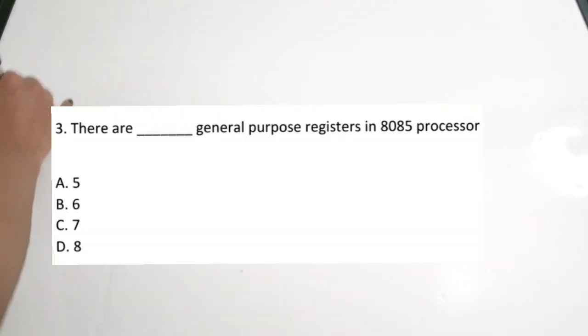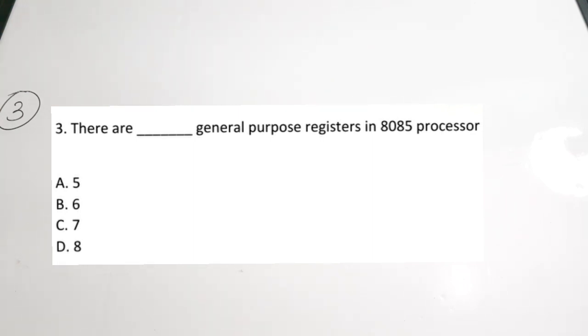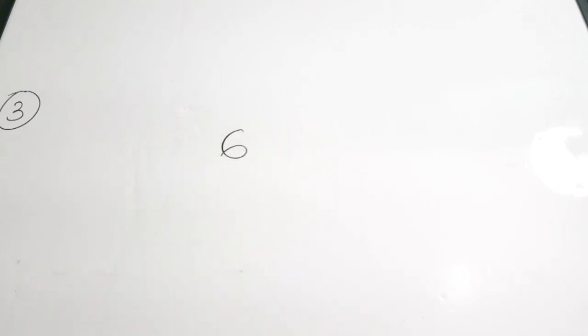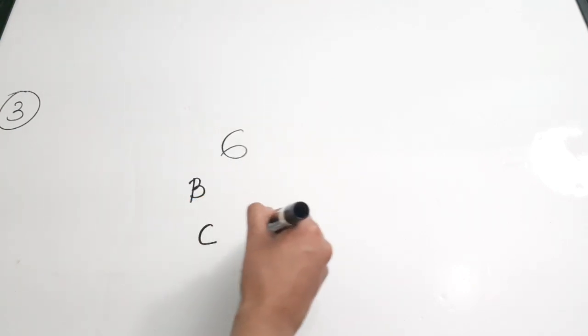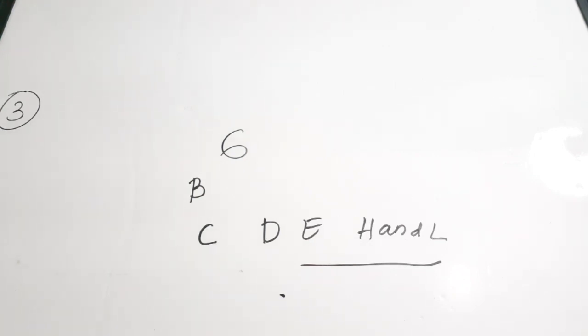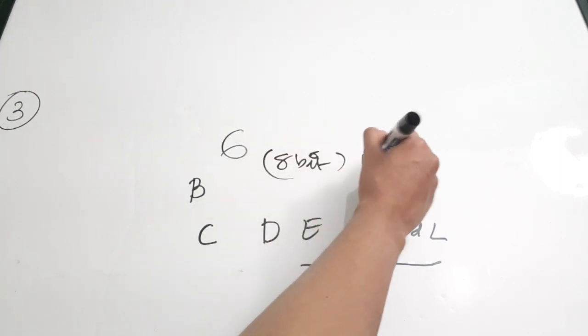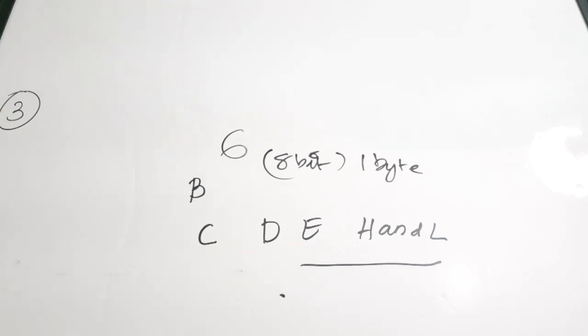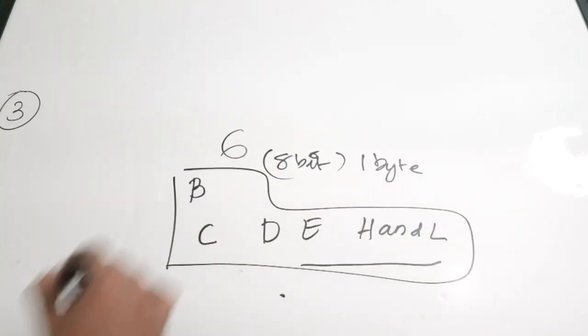The third question: how many general purpose registers are present in the 8085 processor? There are six general purpose registers, named B, C, D, E, H, and L. Each of these registers holds one byte of data. The correct answer is option D.